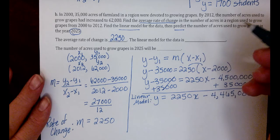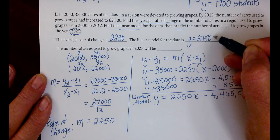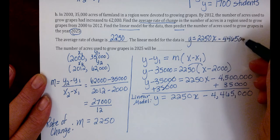Here we're going to write Y equals 2,250X minus 4,465,000.